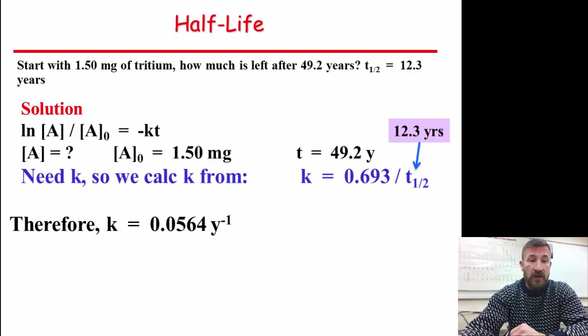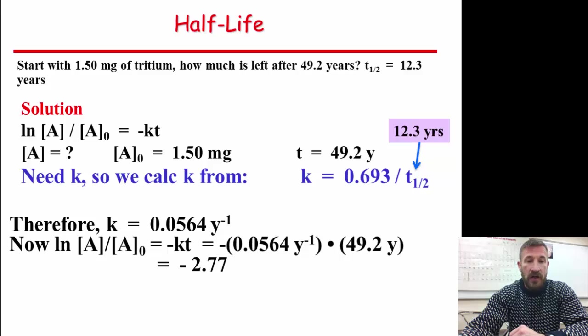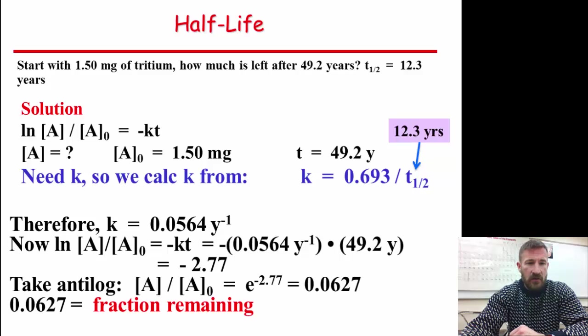And therefore, the rate constant is 0.0564 years to the negative 1. And now we plug that into our equation. We find that the value is negative 2.77. After that, we plug it in and we find the fraction remaining is 0.0625.